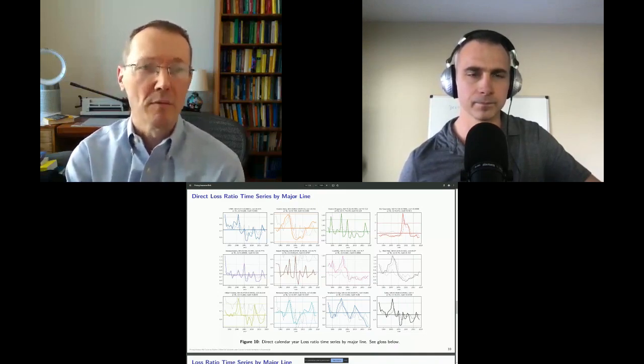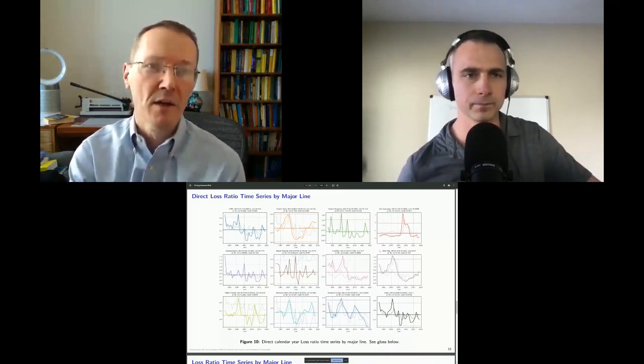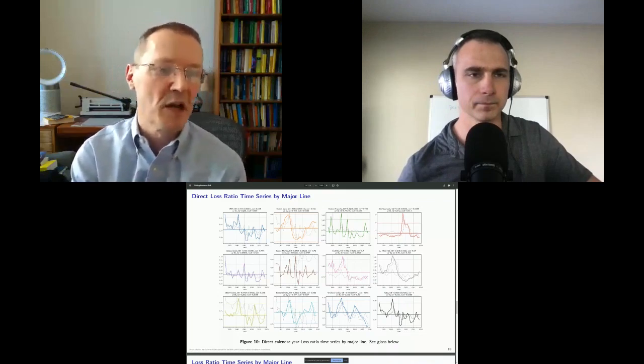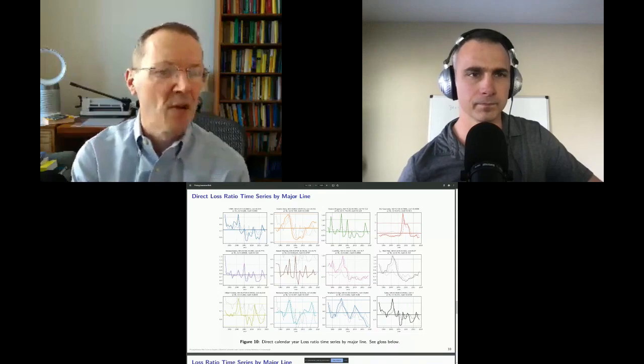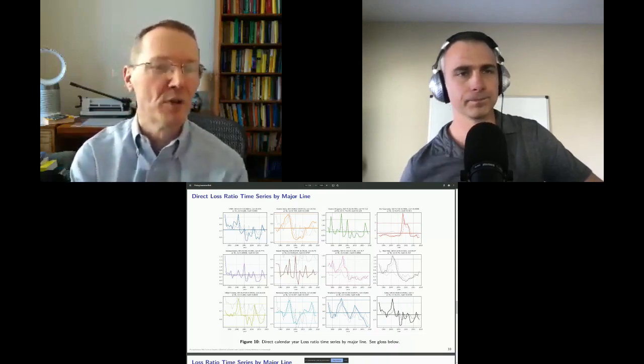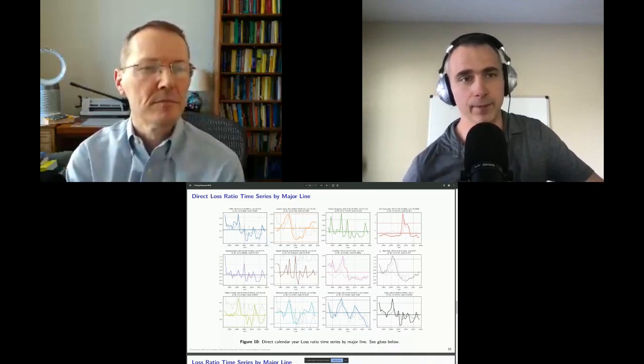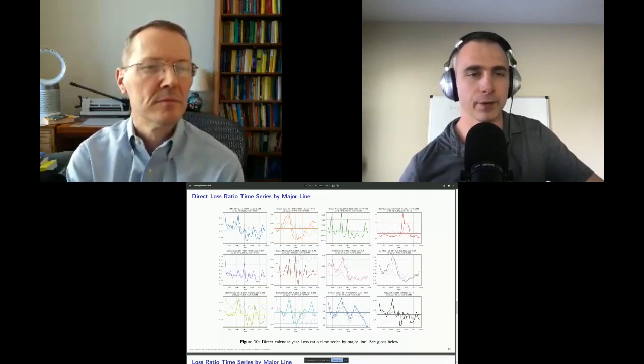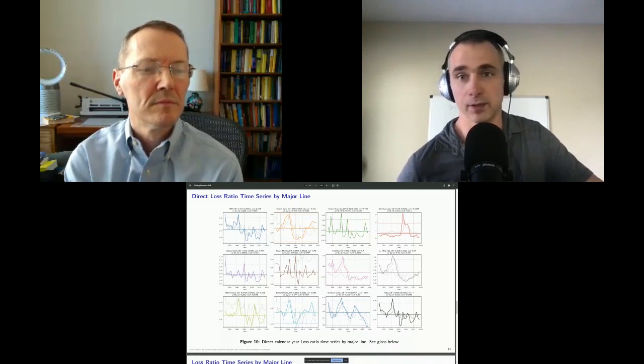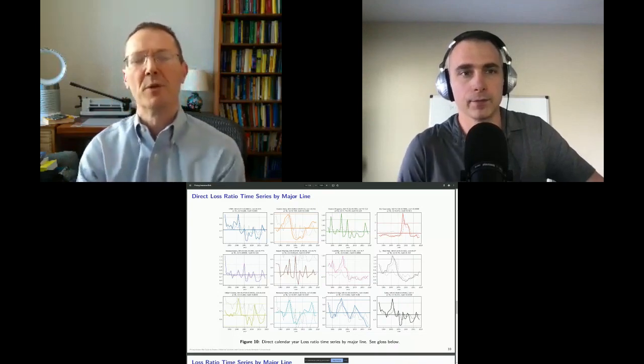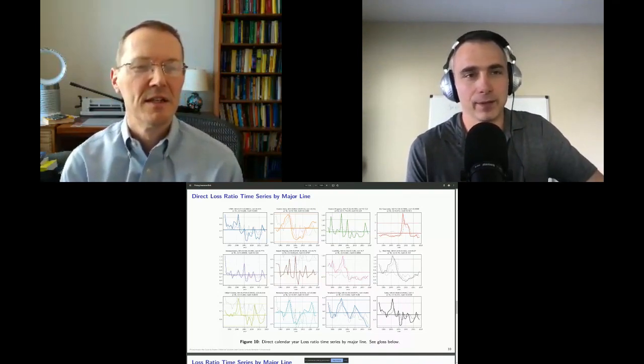I've got commercial multi-peril, commercial auto, commercial property, financial guarantee, homeowners, inland marine, liability, med mal, other commercial, personal auto, work comp, and total. There's a lot of information on these plots. So let's look at CMP. The solid wiggly line is your direct loss ratio over time. You can see for CMP that's varying between a high of about 95% that we hit in Andrew and in 2001 down to a low in the 50% range that we saw in 2004. I find that very surprising, a 95 loss ratio in Andrew and again in 2001. It's about 50-50 between property and liability, so a lot of cat exposure.